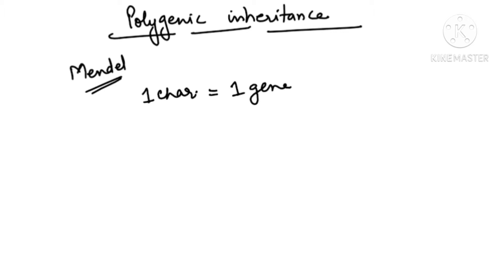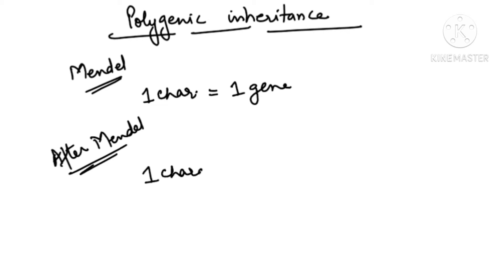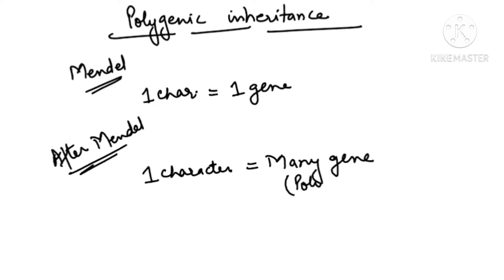But later on, after the Mendel era was over — in the post-Mendel era — scientists observed that sometimes one character can be controlled by many genes. As a result, we call this the polygene concept, so it is polygenic inheritance.